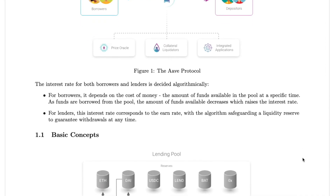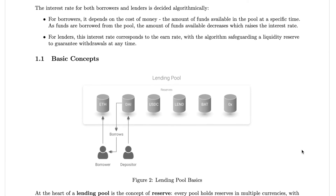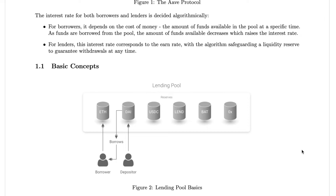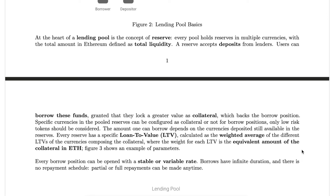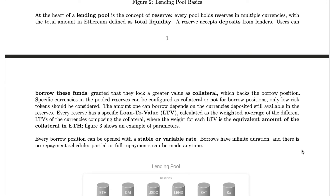Every reserve has a specific loan-to-value, or LTV, calculated as the weighted average of the different LTVs of the currencies composing the collateral, where the weight of each LTV is the equivalent amount of the collateral in ETH. Every borrow position can be opened with a stable or variable rate. Borrows have an infinite duration and there is no repayment schedule. Partial or full repayments can be made at any time. In the case of price fluctuations, a borrow position might be liquidated when the price of the collateral drops below the liquidation threshold.